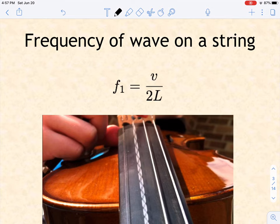We use that, for example, to illustrate why a large instrument with very long strings has on average a lower pitch, such as a cello or string bass, compared to a smaller instrument with shorter strings such as a violin.